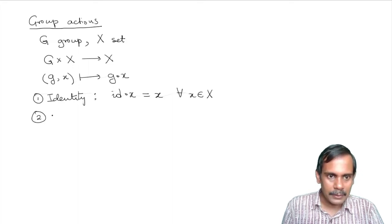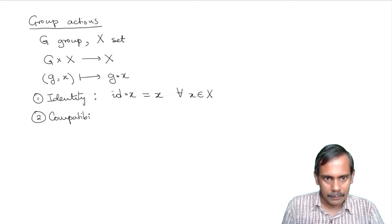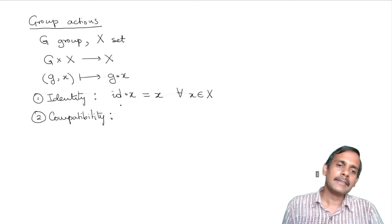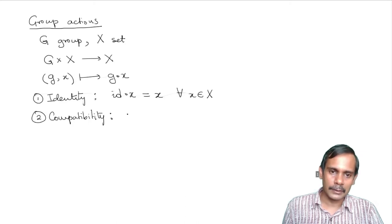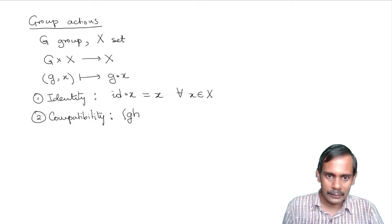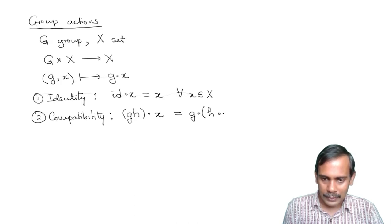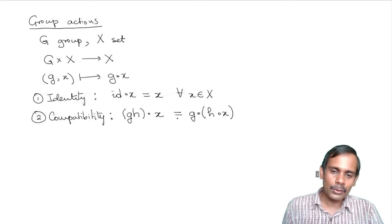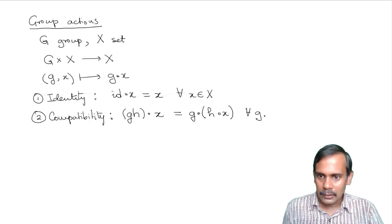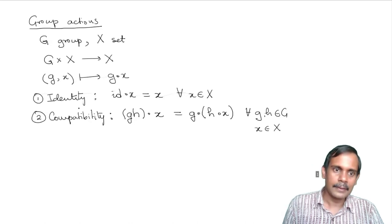The second axiom is called the compatibility axiom. It says that the action is compatible with the group structure: if you take two elements G and H of the group, multiply them together, and apply the result to X, that is the same as making G act on the result of applying H to X. This looks like associativity, except G and H are in G but X is in the set X.